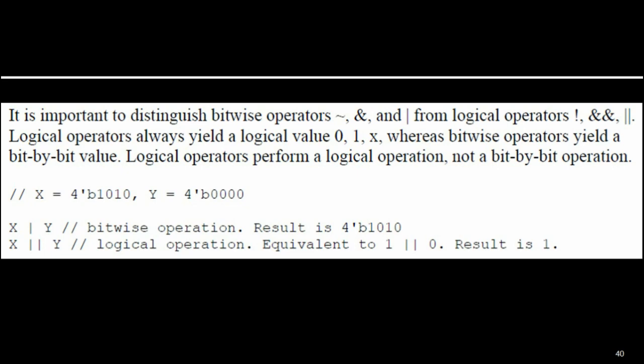It is important to differentiate the bitwise operator from the logical operator. Logical operators always produce a logical value: 0, 1, or X (single bit). Bitwise operators yield a bit-by-bit value. Logical operators perform logical operations, not bit-by-bit operations. For example: X = 4-bit 1010, Y = 4-bit 0000. X | Y (bitwise OR) gives 1010 (4-bit result), but X || Y (logical OR) is equivalent to logic 1 OR logic 0, giving a single-bit 1. Don't confuse these two.